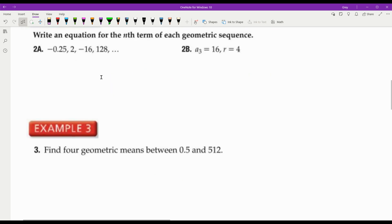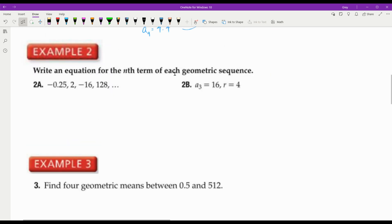Look at example 2. Write an equation for the nth term of each geometric sequence. That means we're going to put something together like this, and we have to find a distinctive A sub 1 and r for each of our problems. When we did this for arithmetic, we found A sub 1 and we found d. So write an equation. My first term, of course, is negative 0.25.